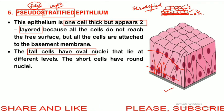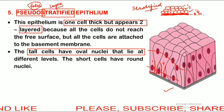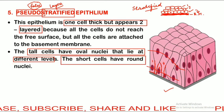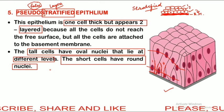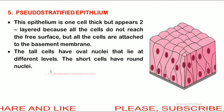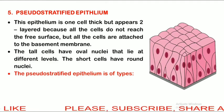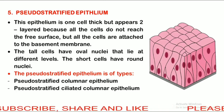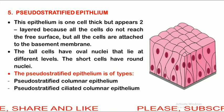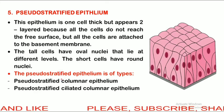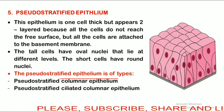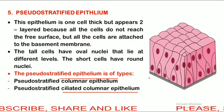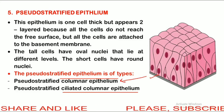In pseudostratified epithelium, the tall cells have oval nuclei that lie at different levels. The short cells have round nuclei present almost in the center. Pseudostratified epithelium is of two types: pseudostratified columnar epithelium and pseudostratified ciliated columnar epithelium.